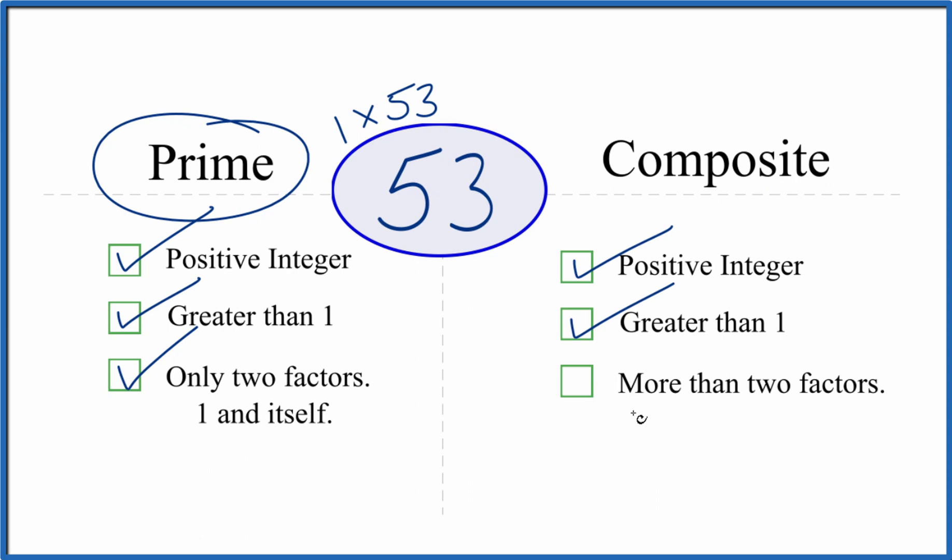But is it a composite number? Because it's a positive integer, it's greater than 1, but are there more than two factors? We said there are only two factors, so there's not more than two factors. It is not composite.